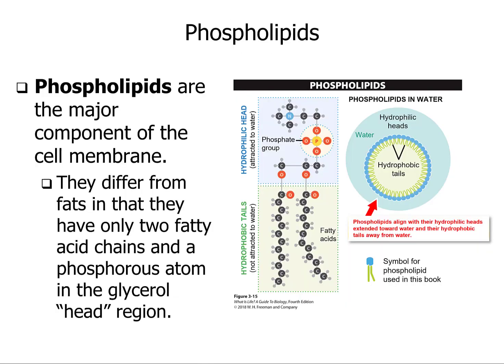Phospholipids are the major component of cell membranes. They differ from fats in that they only have two fatty acid chains and a phosphorus atom in the glycerol head. Unlike the triglyceride, the phospholipid has a phosphate group attached to the glycerol, and only two of the fatty acid chains — a really interesting and universal feature of cells.